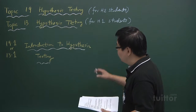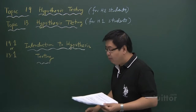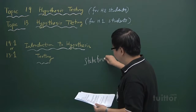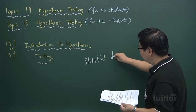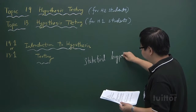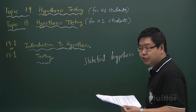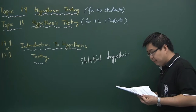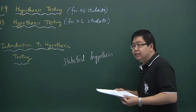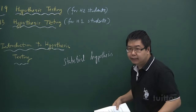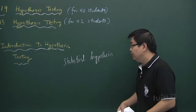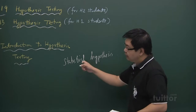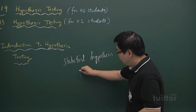Before we go into hypothesis testing proper, we need to know this thing called Statistical Hypothesis. That is a hypothesis that statisticians usually write down before they do any research. A statistical hypothesis is basically an assumption, claim, or statement concerning the population mean. It can concern other things like population variance, but in our A-level syllabus, we will only be focusing on testing hypotheses involving the population mean.